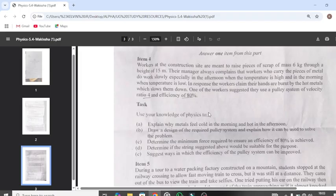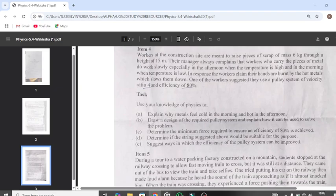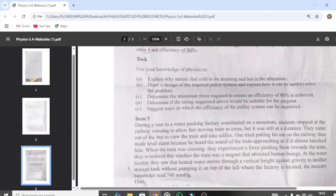Let's see what's here in the tasks. Use the knowledge of physics: Part A - explain why the metals feel cold in the morning and hot in the afternoon. Part B - draw a design of the required pulley system and explain how it can be used to solve the problem. Part C - determine the minimum force required to ensure an efficiency of 80 percent.